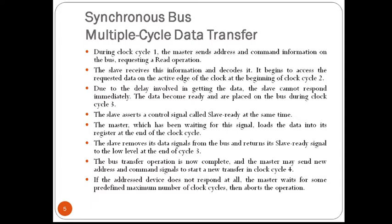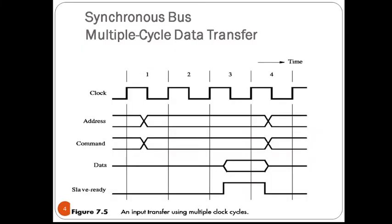The bus operation is now complete and the master may send a new address to start a new transfer in clock cycle four. The slave ready signal acts as an acknowledgement from the slave to the master confirming that valid data have been sent. In the example, the slave responds in cycle three, but another device may respond sooner or later. The slave ready signal allows the duration of a bus transfer to change from one device to another.